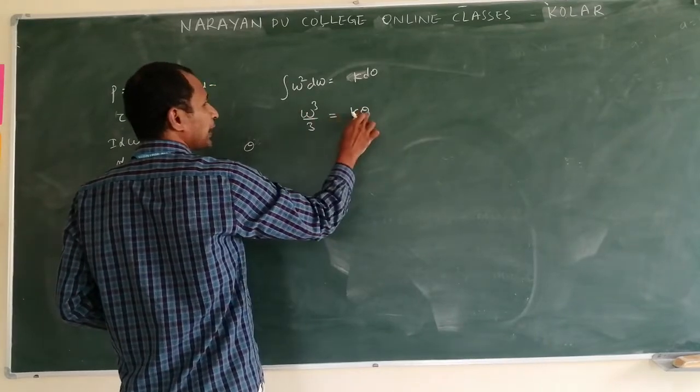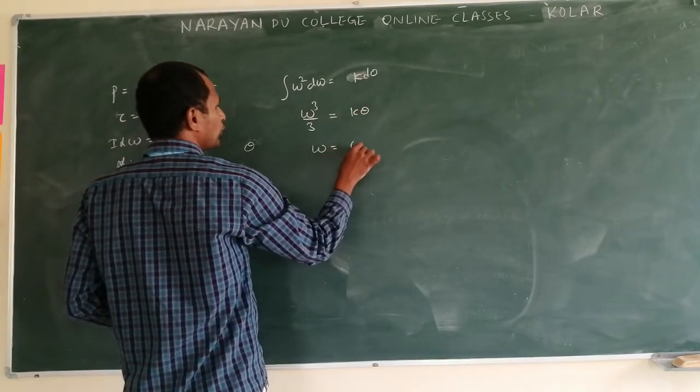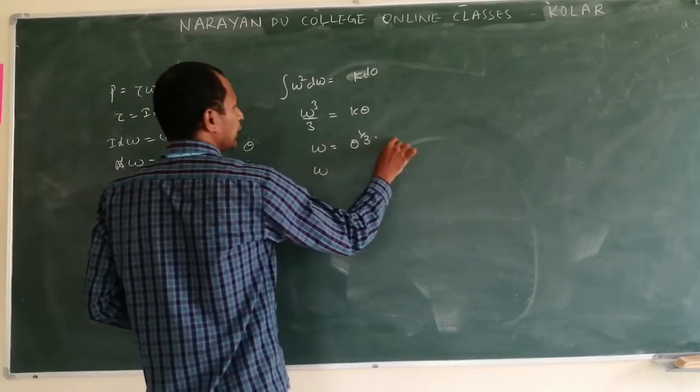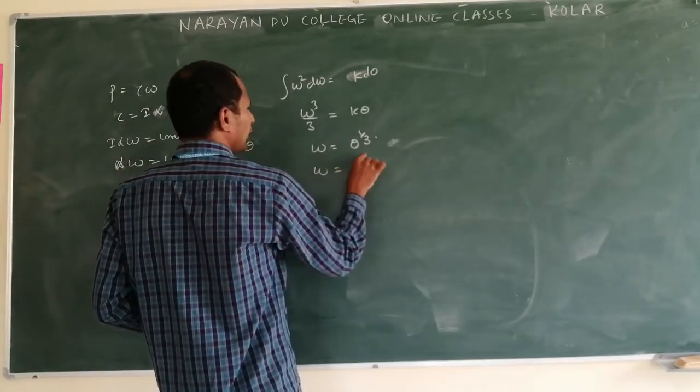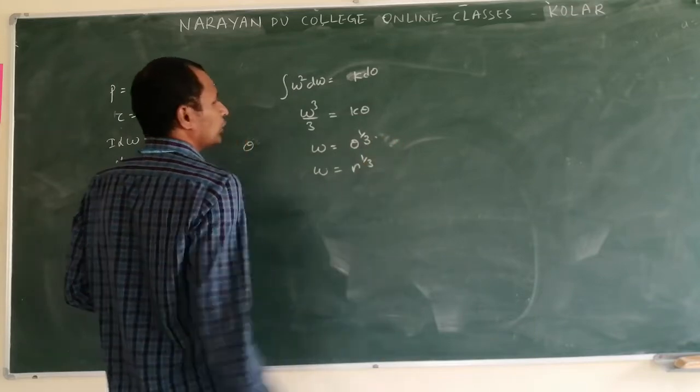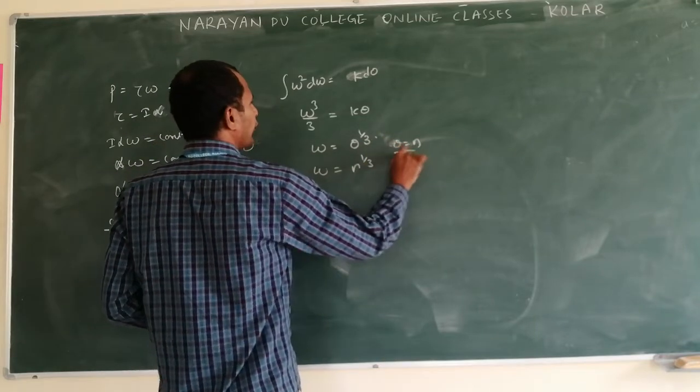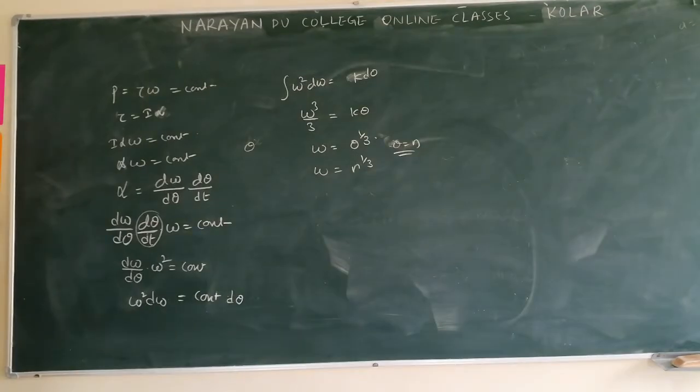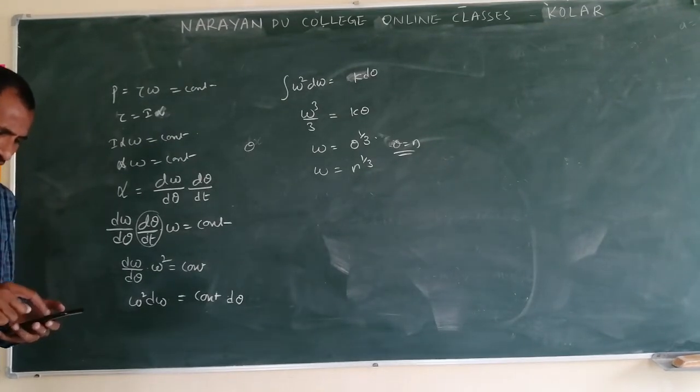Relation between omega and theta. Omega is equal to theta power 1 by 3, right? Theta you take it as n, then this will become - if you take theta is equal to number of terms n, then n power 1 by 3. Next, common. Next.